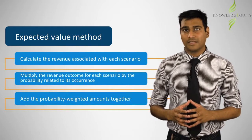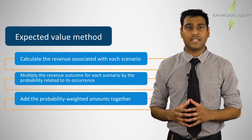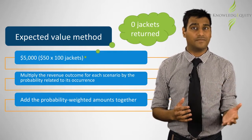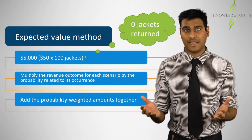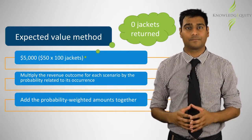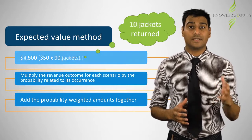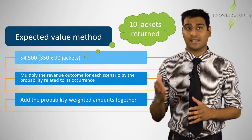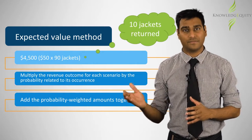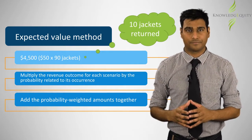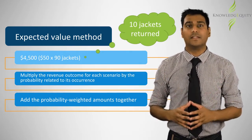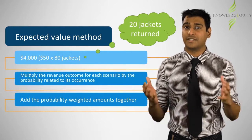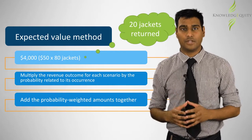Applying step one, the revenue associated with zero jackets returned is $5,000, which is $50 times 100 jackets. The revenue associated with 10 jackets returned is $4,500, which is 90 jackets times $50. Similarly, the revenue associated with 20 jackets returned is $4,000, which is 80 jackets times $50.